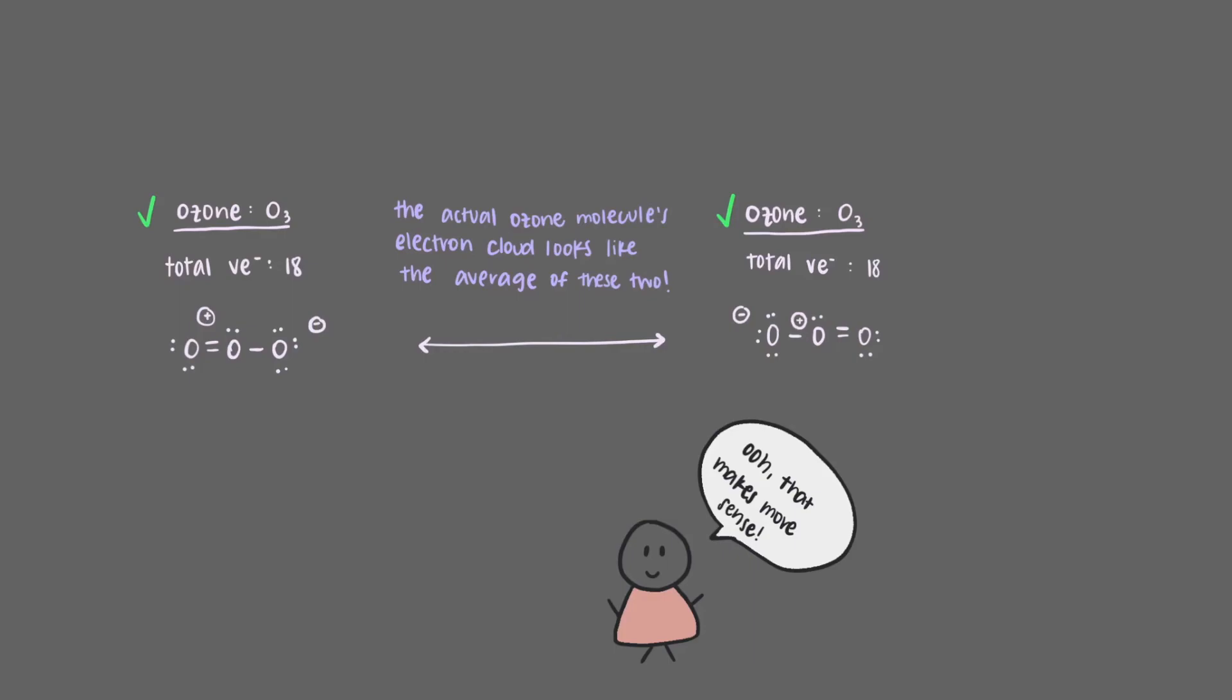So we draw a double-headed arrow between these two different Lewis structures to show that these are two forms representing the same molecule. These are two resonance forms for the ozone molecule.